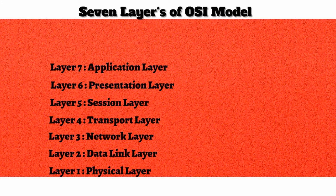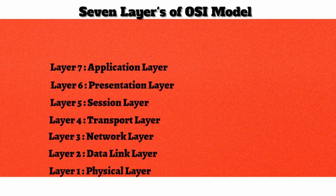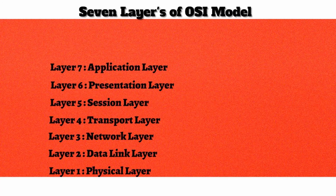The application layer is one of the most challenging layers to understand because the name is confusing. When we see the word application we might think of something like Microsoft Word or a mobile app, but that is not what this means. Something that lives at the application layer is a network service that allows desktop applications to take advantage of it. For example, Microsoft Active Directory living at the application layer provides that network service to end-user applications. The goal is to memorize these seven layers of the OSI model.